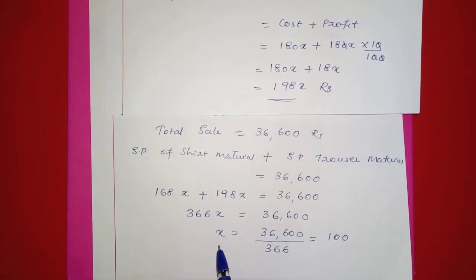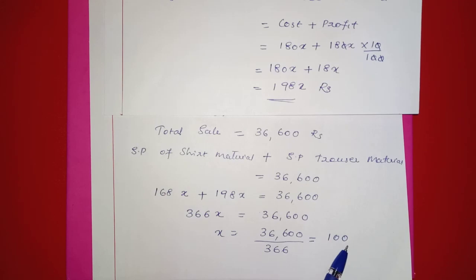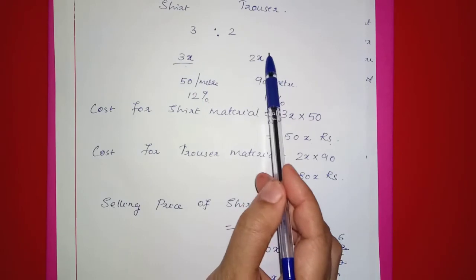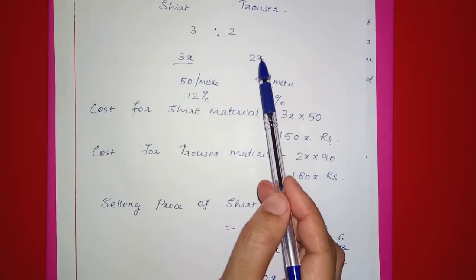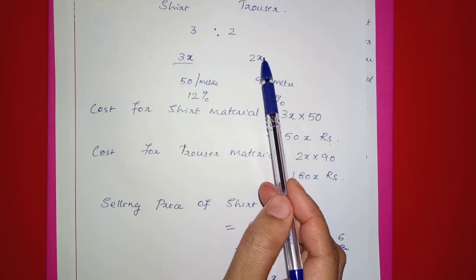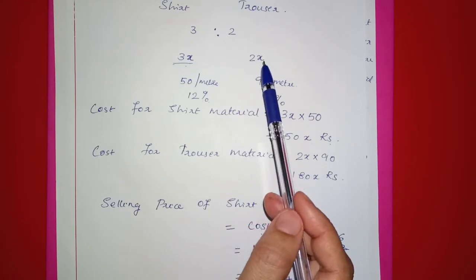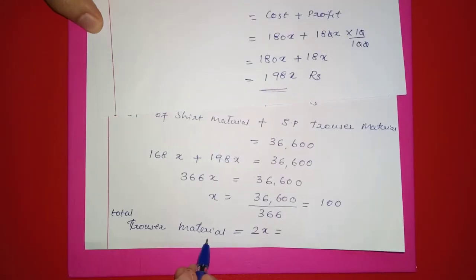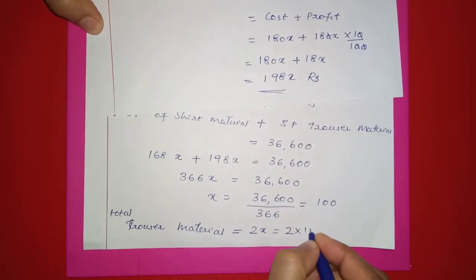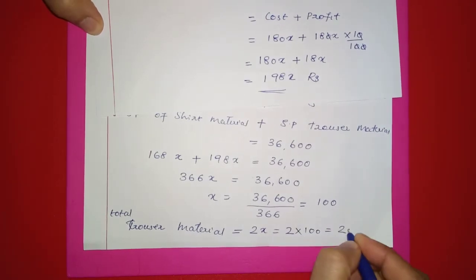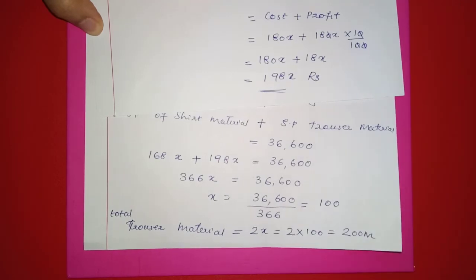So x is equal to 100. The question asks how much trouser material was bought. The trouser material is 2x meters. Substituting x equals 100, we get 2 into 100, which equals 200 meters. The answer is 200 meters of trouser material.